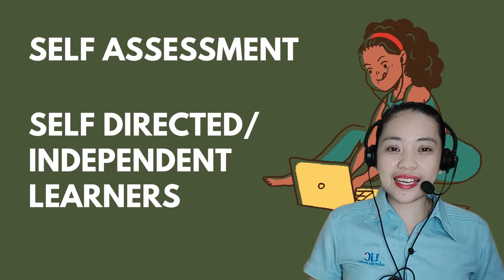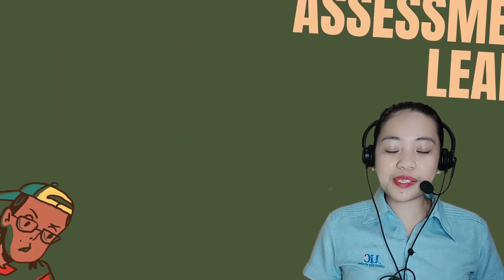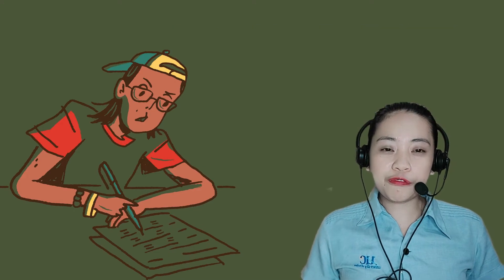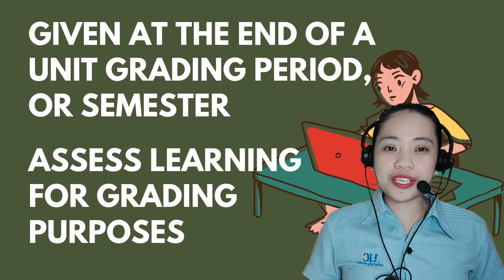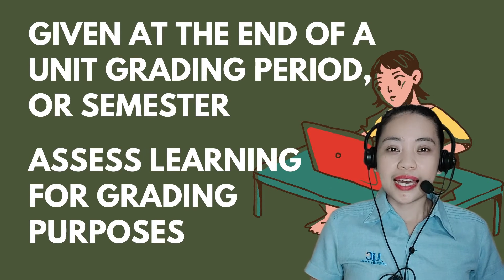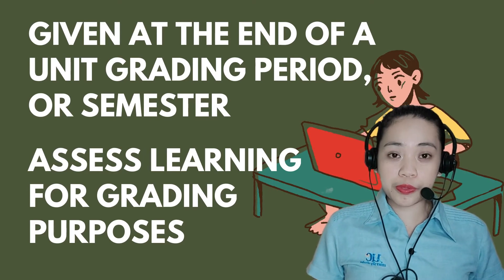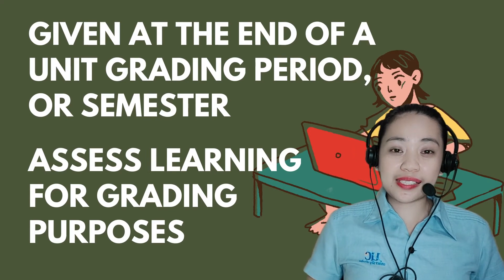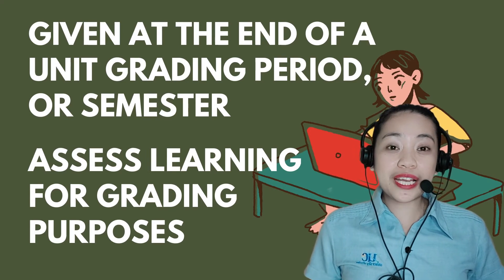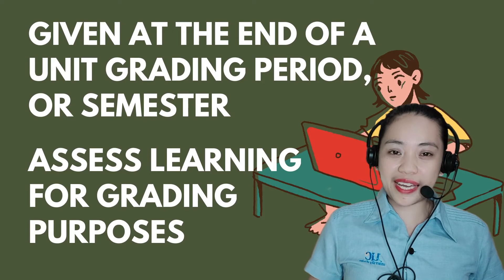The third is assessment of learning, given at the end of a unit, grading period, or a term like a semester. It assesses learning for grading purposes. Examples include the critical test, prelim, midterm, semifinal, and finals.